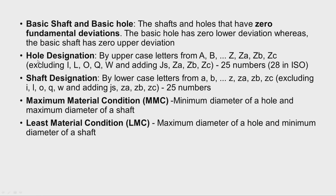For hole designation, we use capital letters A, B, C up to Z, then ZA, ZB, ZC, excluding I, L, O, Q, W and adding JS — giving 25 designations as per the Indian standard. Similarly for shaft designation, we use lower case letters a, b, c, d up to z, then za, zb, zc, excluding i, l, o, q, w and adding js — also giving 25 shaft designations. In ISO there are 28 designations.